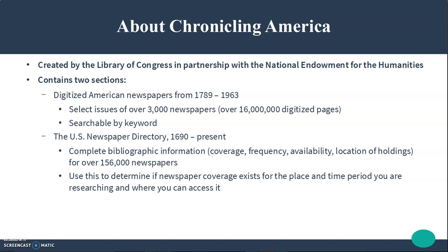It was created by the Library of Congress in partnership with the National Endowment for the Humanities, and it contains two sections. One is digitized American newspapers from 1789 to 1963. This includes select issues of over 3,000 newspapers for a total of over 16 million digitized pages, and it is searchable by keyword.